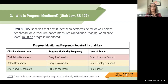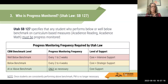Who is progress monitored? Utah law Senate Bill 127 clearly specifies that any student who performs below or well below benchmark on curriculum-based measures, including Acadiens Reading and Acadiens Math, must be progress monitored. The state board of education realizes the power of curriculum-based measures and also recognizes that schools are not using them as much as they should be. The frequency required by Utah law is based on the student's benchmark performance. If a student performs well below benchmark, they should be monitored every one to two weeks and should be getting both core and intensive support.